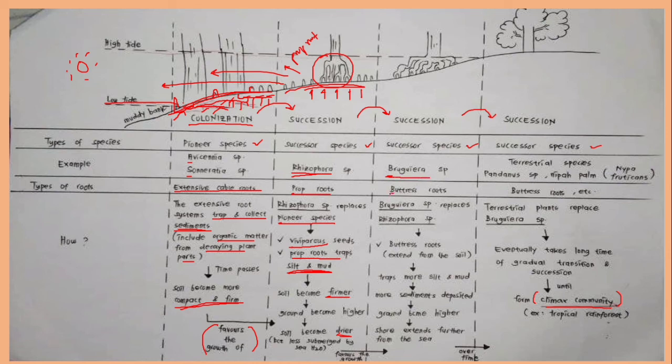Bruggera species have B types of roots, that is buttress roots, stronger types of roots. And these buttress roots extend from the soil. And this type of roots will trap more salt and also mud. And more sediments will be deposited, so the ground will become higher. So once the ground become higher, more exposure to the sunlight, so the soil will become drier. And over the time, this process will be kept replaced until terrestrial species replace the Bruggera species.